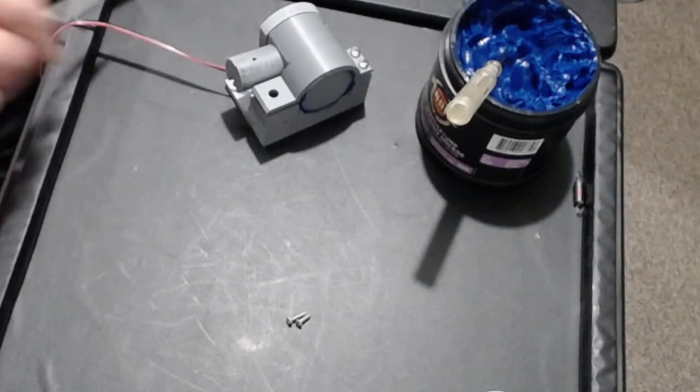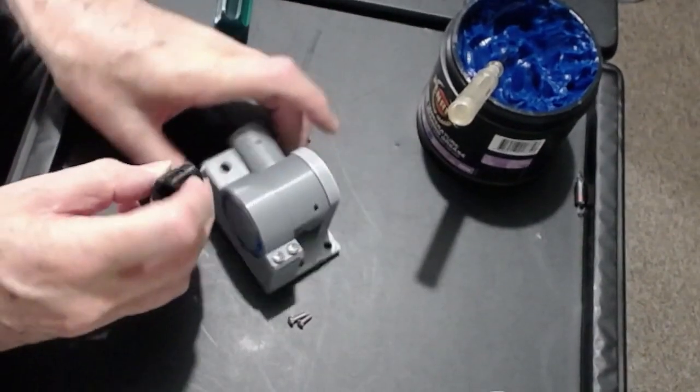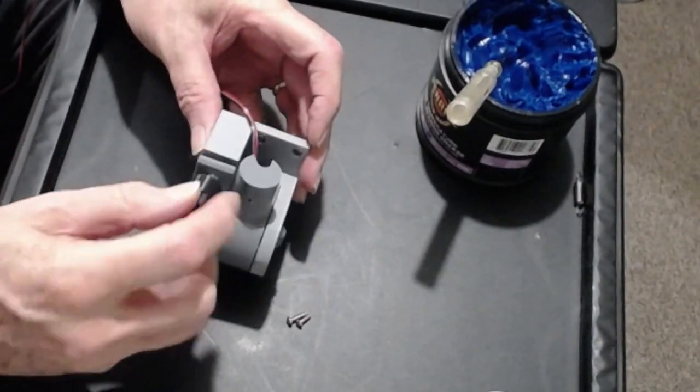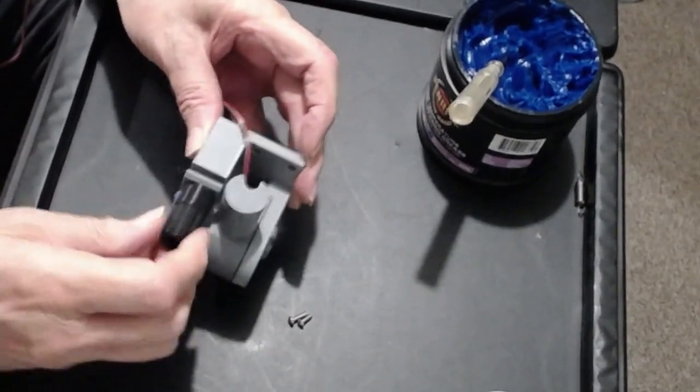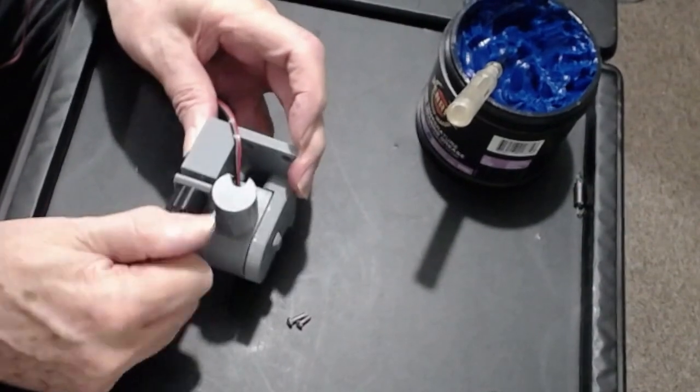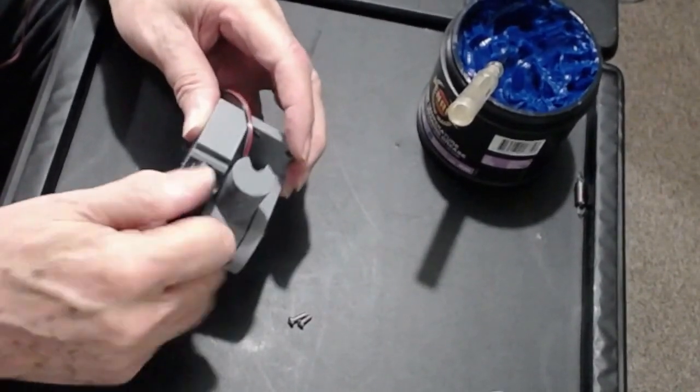Once that's through, there's an M6 thread in this lower section, so you can just turn that in there and it should take up in the lower section. That's what gives you your friction control.